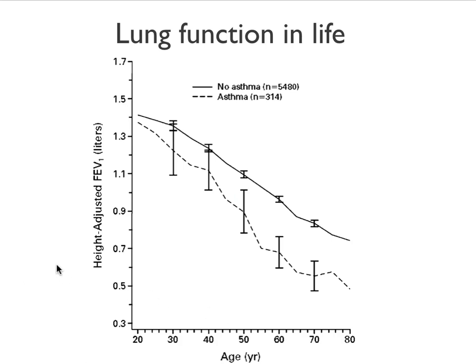Asthma not only affects your life because of episodes of shortness of breath and wheezing; it also leads to an accelerated decline in lung function. On the x-axis is age and on the y-axis is lung function. As you can see, in normal people lung function decreases as you age. And if you have asthma, this lung function decline is accelerated.